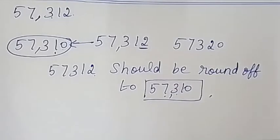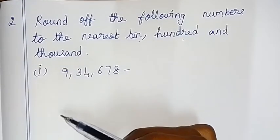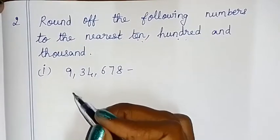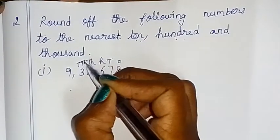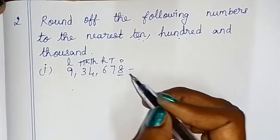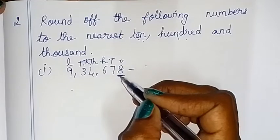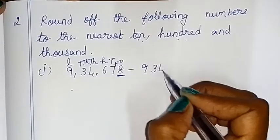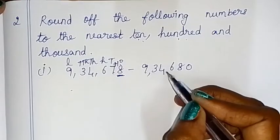Now we need to round off the following numbers to the nearest 10, 100, and 1,000. For 4,678: the ones place digit is underlined. Since the ones digit is greater than 5, we add plus 1. So 4,678 rounded to the nearest ten is 4,680.